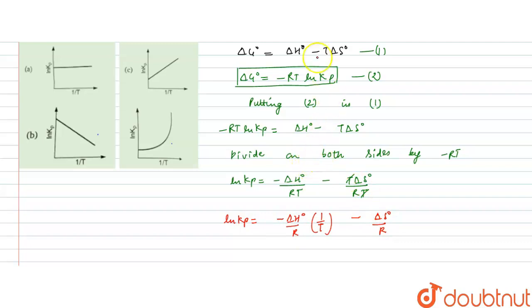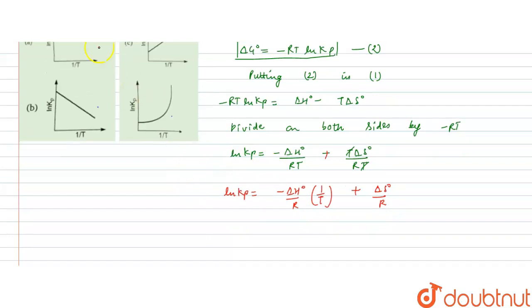Now we have ln Kp equals minus delta H⁰ by R times 1 by T minus delta S⁰ by R. We have this relation—sorry, we divided by minus RT, so this will become positive. So we have plus delta S⁰ by R. Now this is similar to the straight line equation where Y equals MX plus C.